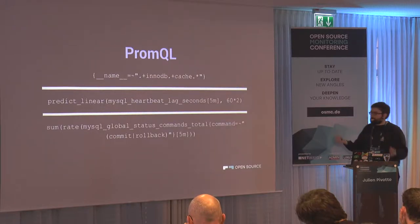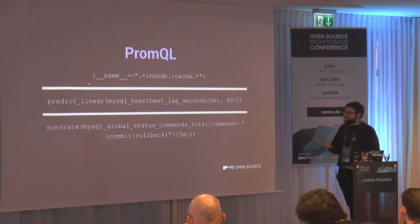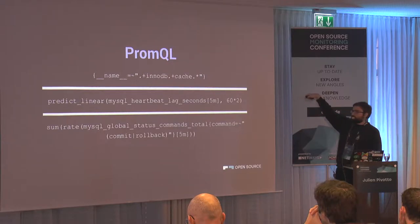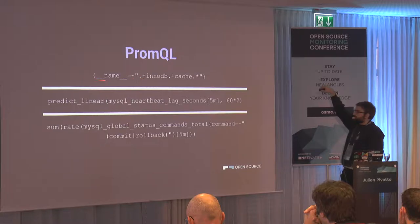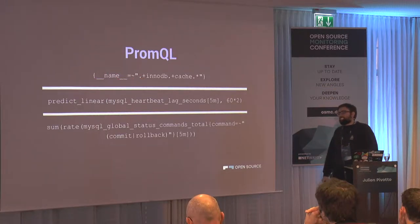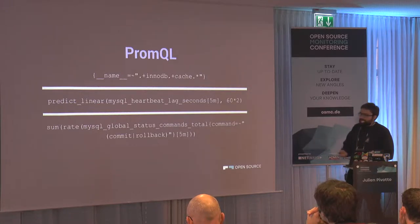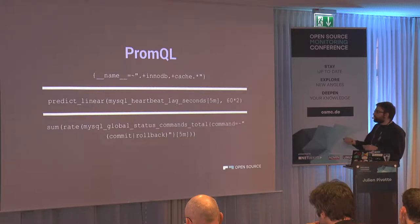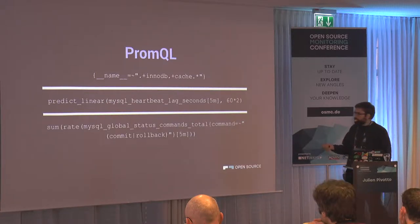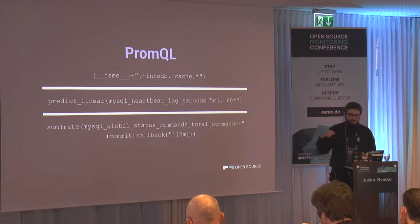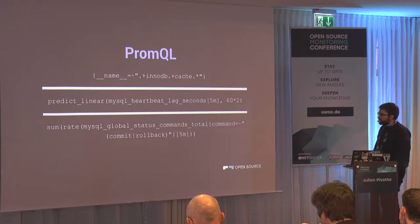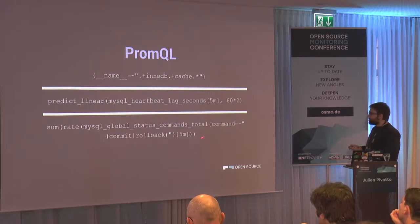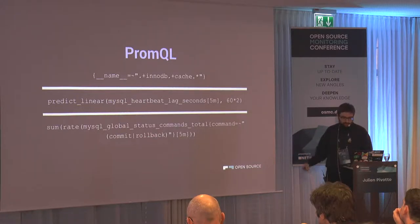The metric name is also a label — it's the special label '__name__'. You can do regex on it, for example to get all variables with 'InnoDB' and 'cache'. There's also a very useful function called predict_linear: Prometheus will look at the last five minutes of data and predict what the replication lag will look like in two minutes. You can also sum multiple labels together — for example, the sum of all commit and rollback commands gives you one combined metric.